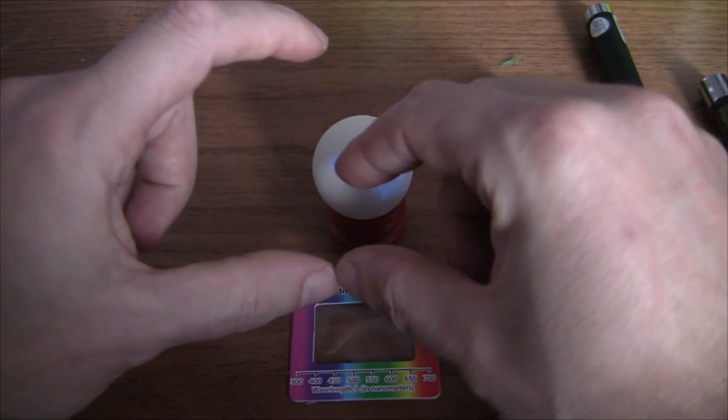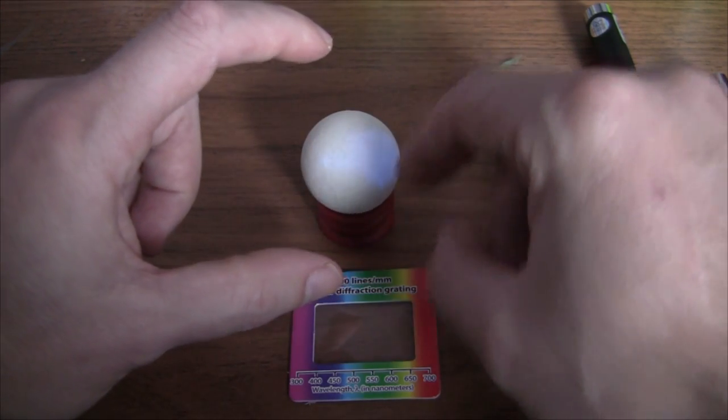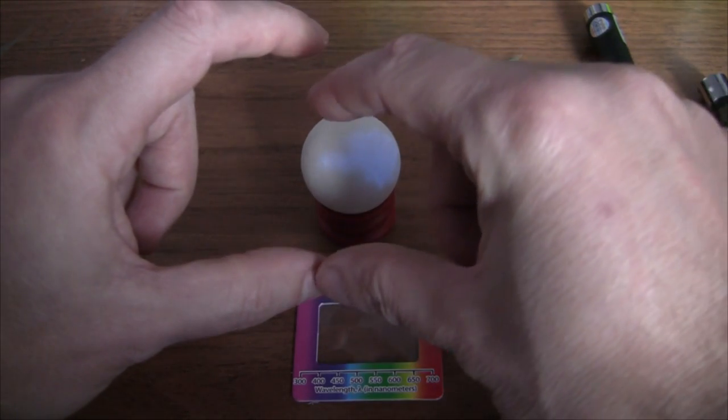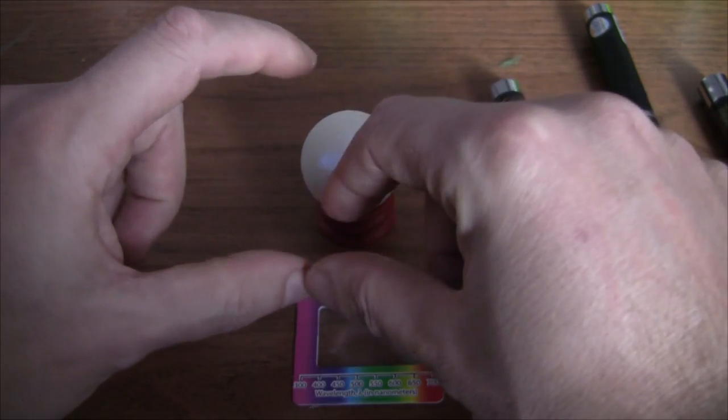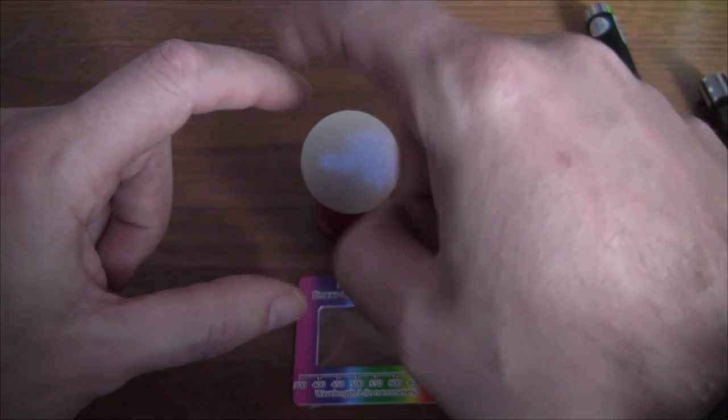And the red photons, they're low energy. They don't have enough energy to get up there. And the green photons, they still don't have enough energy to get up there. And then the purple end of the spectrum has more than enough energy to get up there.